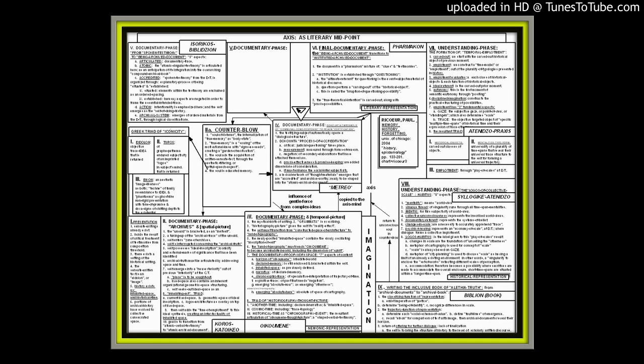Today is March 20th of 2014, and today we're going to take a look at Paul Ricoeur again. We're examining his systematic phenomenology in its three-volume set that was included into one volume, entitled Memory, History, and Forgetting, which was published in 2004 by University of Chicago Press.